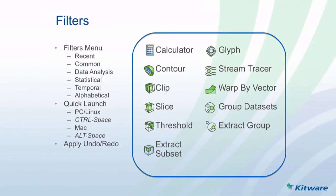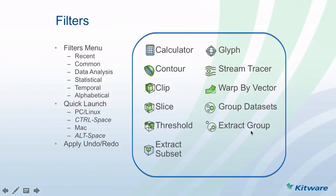Filters are algorithms that you apply on data. The most common filters provided in ParaView include contour, clip, slice, threshold, streamlines, and grouping and extracting from a group. We will see some of them in our examples as well.